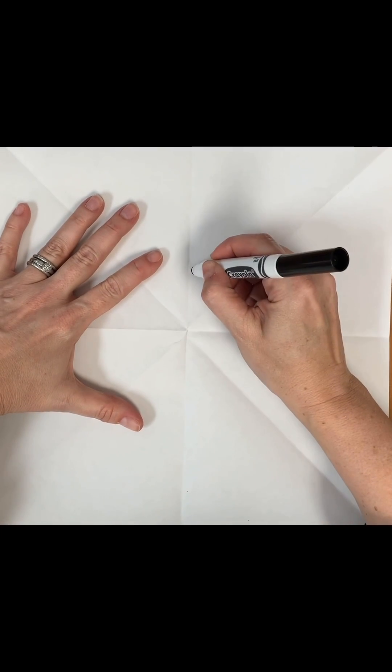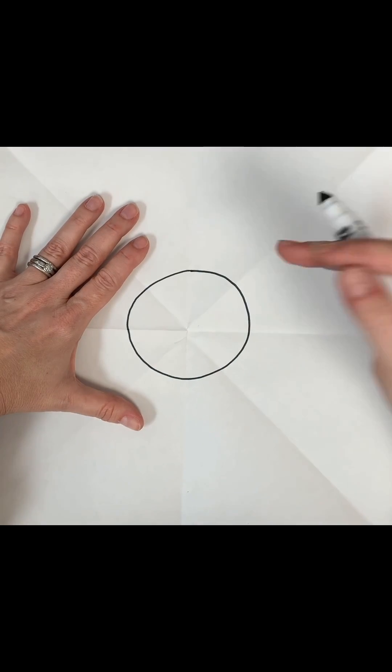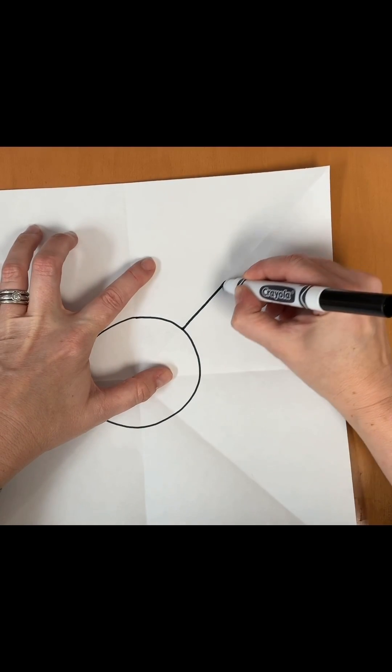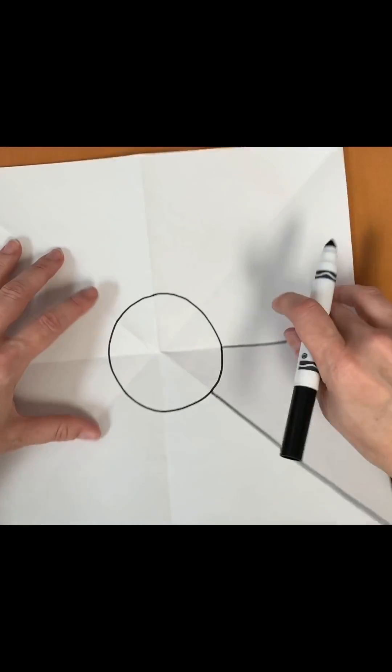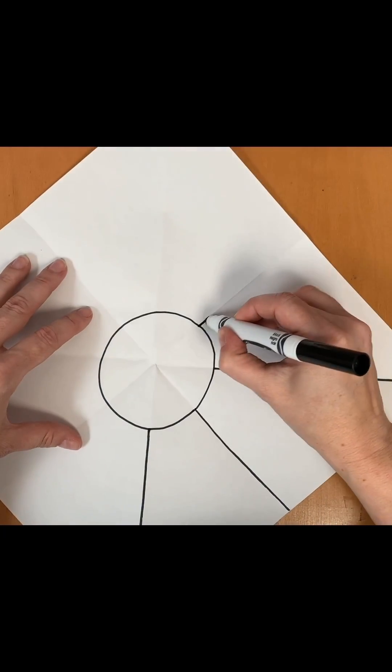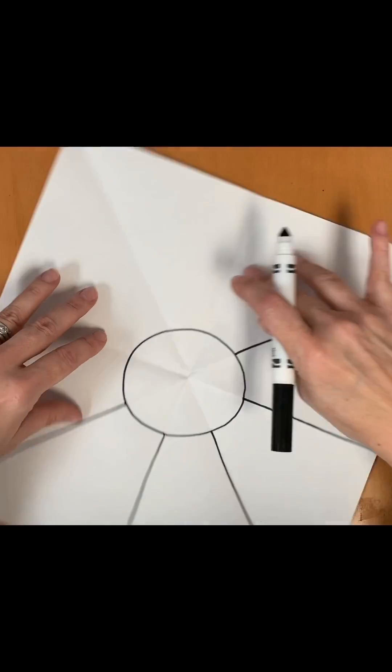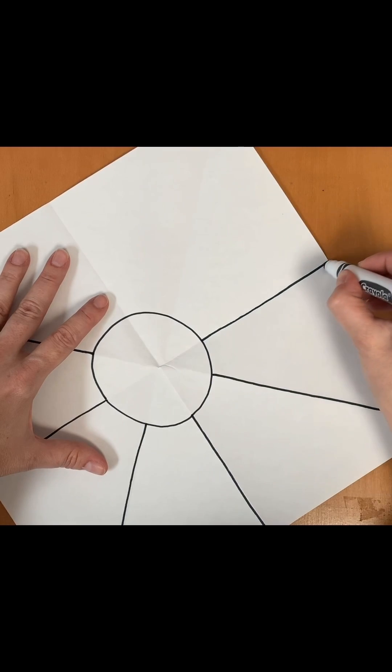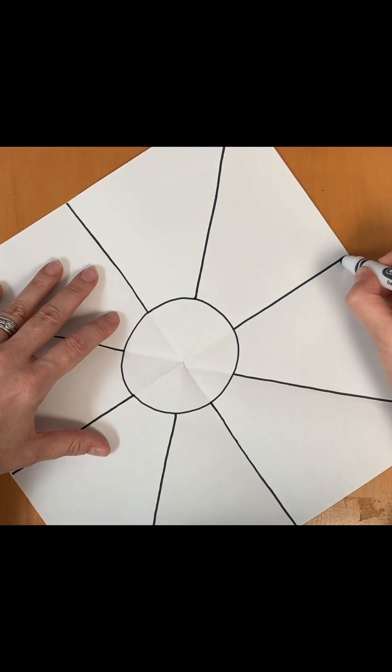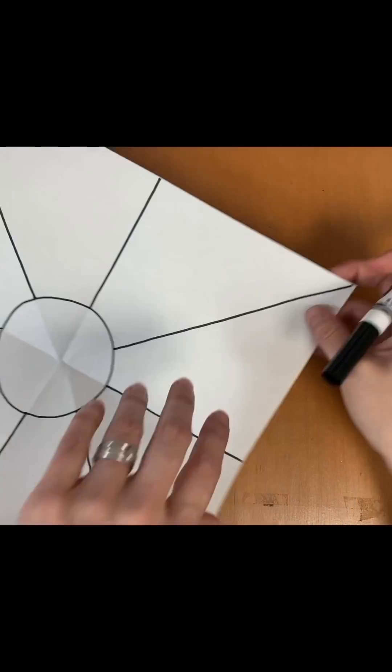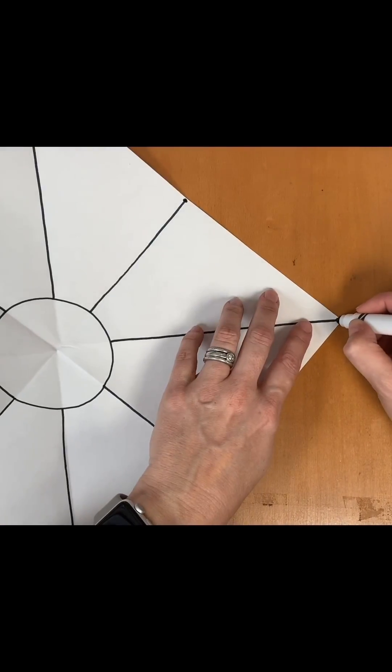Draw a circle in the center of your paper. Draw a line from the circle to the edge of your paper. You're going to do this on the fold line eight times. Draw a small dot at the end of each of the eight lines.